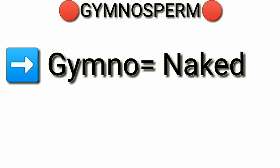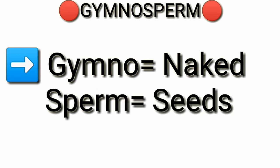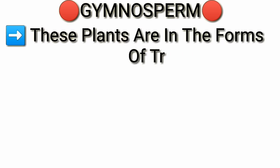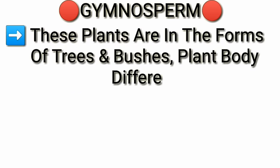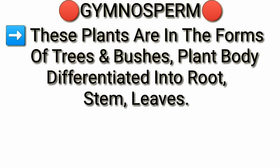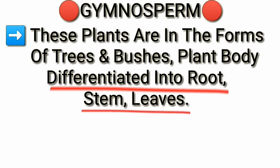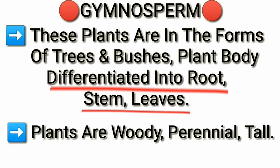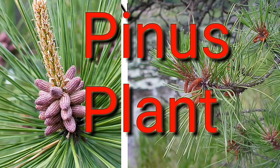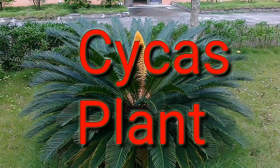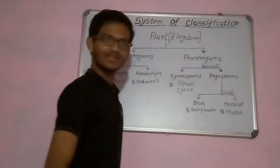Next is Gymnosperms. Gymno means naked and sperm means seeds, so these are naked seed plants. These plants are in the form of trees and bushes. The plant body is differentiated into root, stem, and leaves. Plants are woody and tall. Pinus and Cycas are examples of gymnosperms.